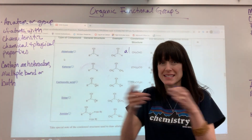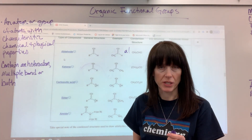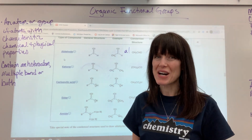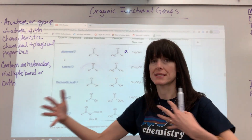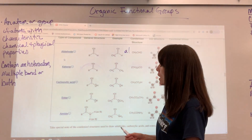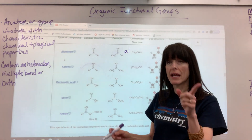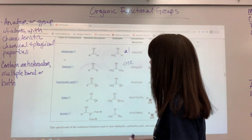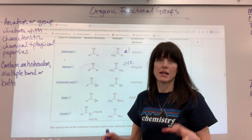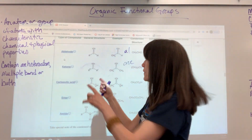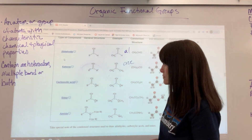Ketones have a double-bonded oxygen somewhere in the middle of the carbon chain — it cannot be at the end. If it's at the end, that's an aldehyde. If the double-bonded oxygen is somewhere in the middle, even second to the last carbon, that is a ketone. The suffix is -one. You can have any number of carbons on either side of the carbon containing the double-bonded oxygen.